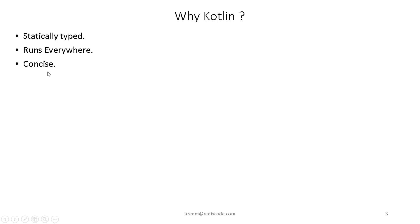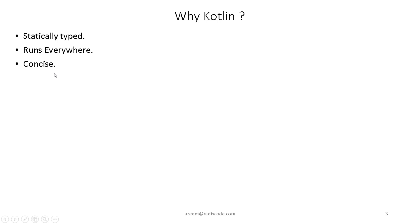Kotlin removes the boilerplate code that we used to write in Java. For example, if you want to print Hello World in Java, you first have to define a class, then define a main function in that class, and then finally print Hello World. In Kotlin, it's very simple — you just write the main function and print your Hello World string. We will talk more about this in upcoming videos when we learn about data classes, and you will see the real difference between Java and Kotlin in terms of conciseness.